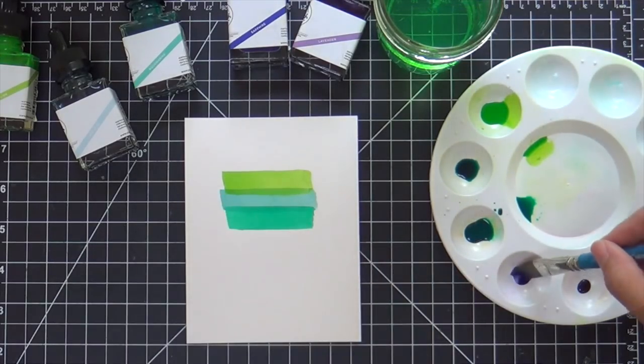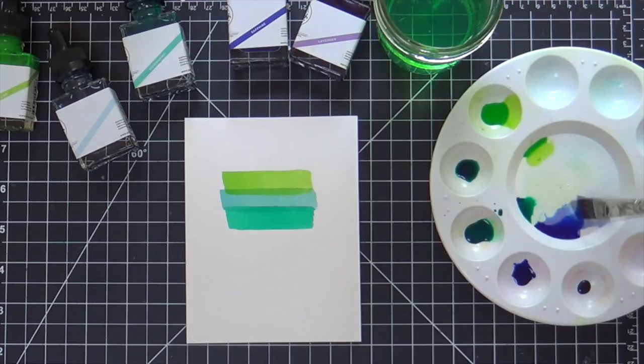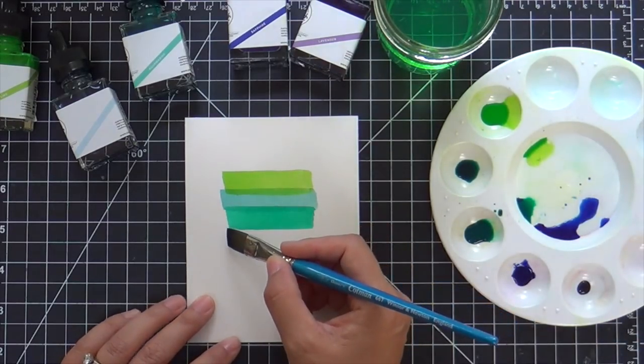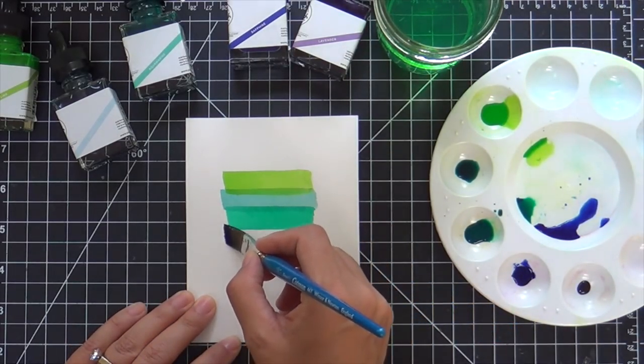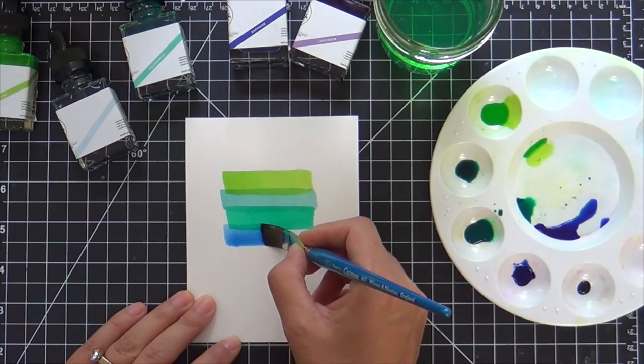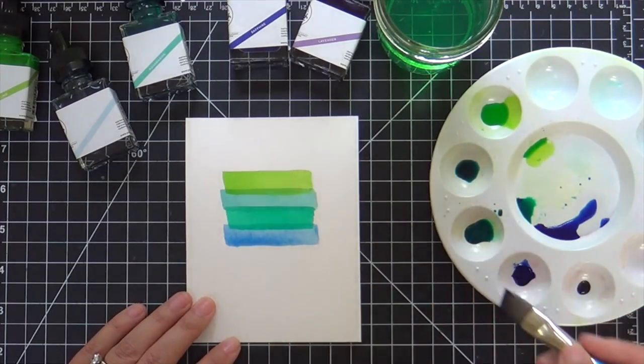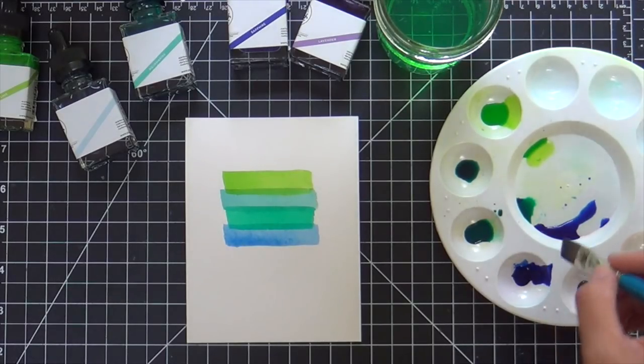Now next is Sapphire, which can be really dark and vibrant. So I kind of diluted it a little bit too much. As I was painting the stripe, I realized that's too light. So I went back in.